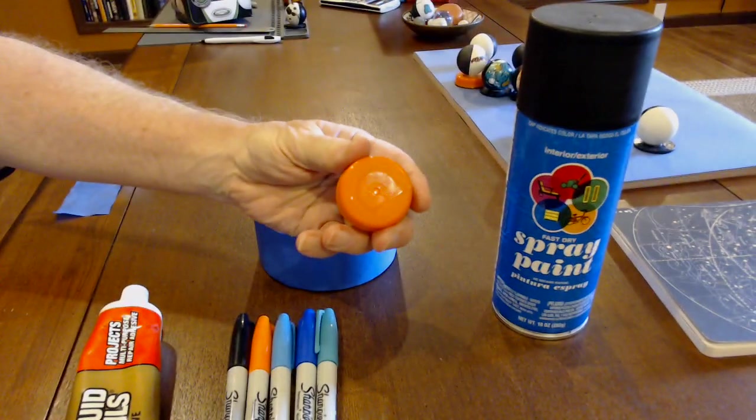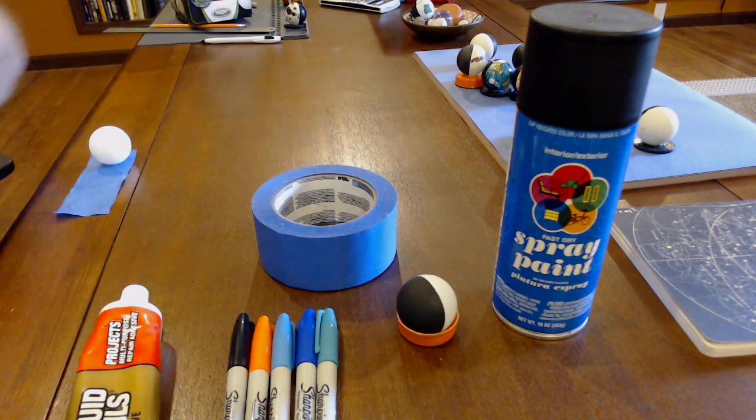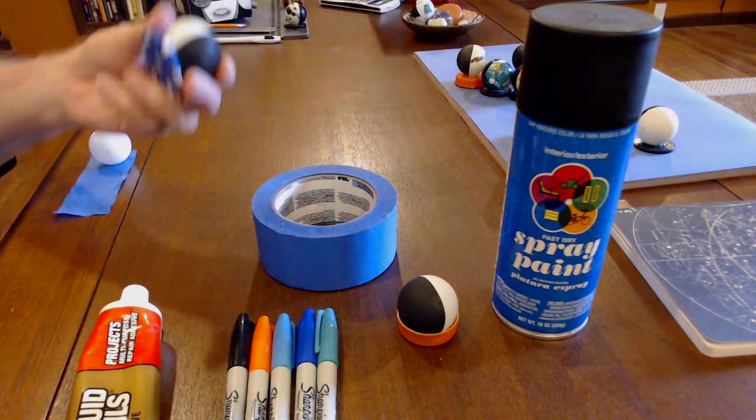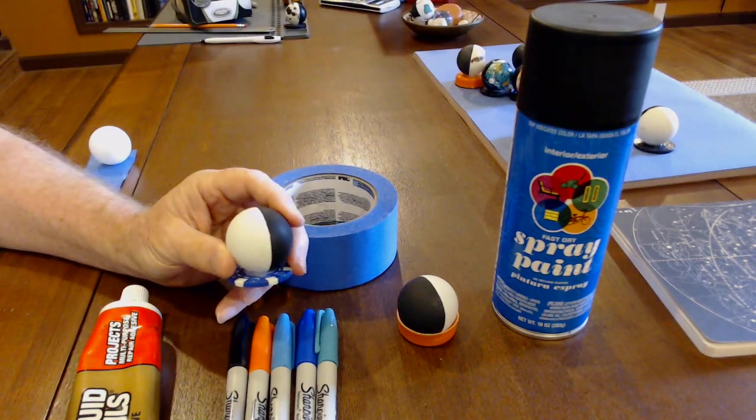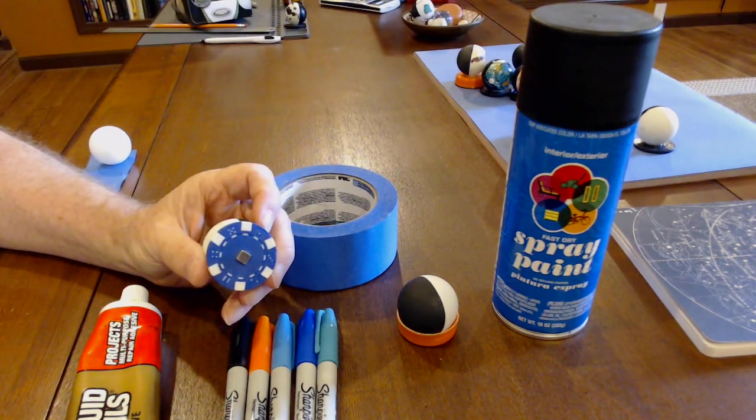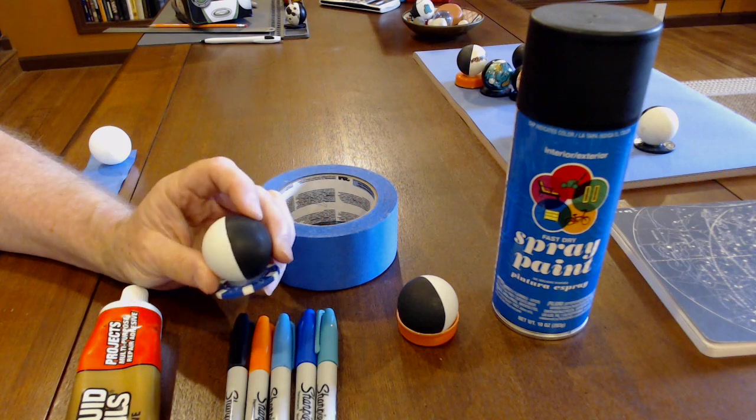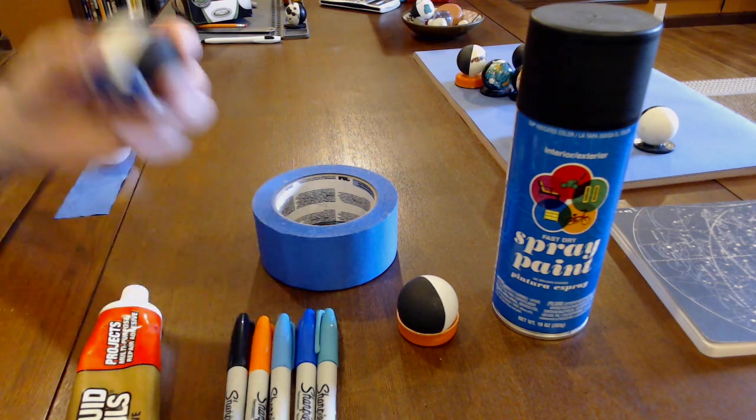I've also got some Gatorade bottle caps—any sort of bottle caps or poker chips work. One advantage of using poker chips for your models is that you can glue a little magnet on the underneath, which means you can stick these models up on a whiteboard which is awfully nice.